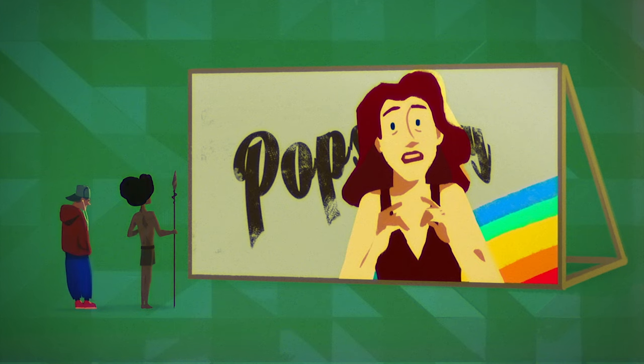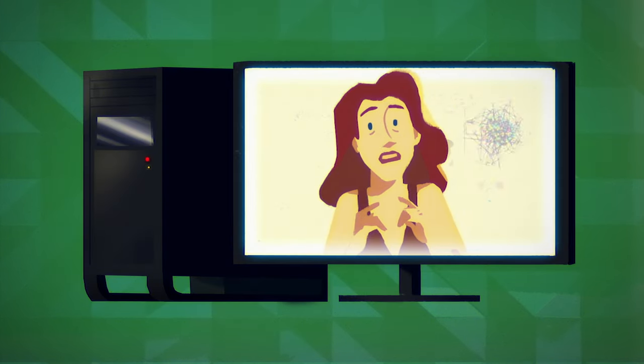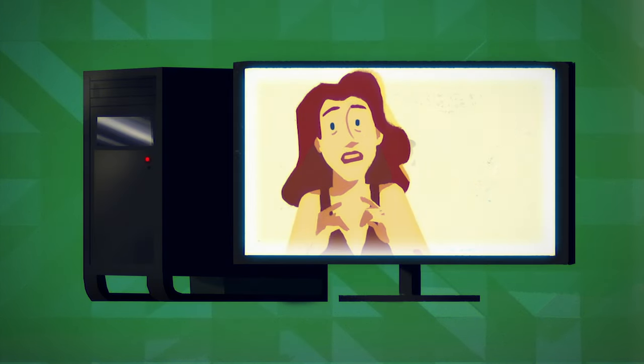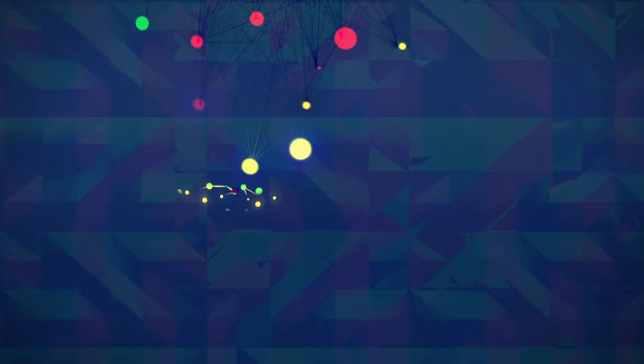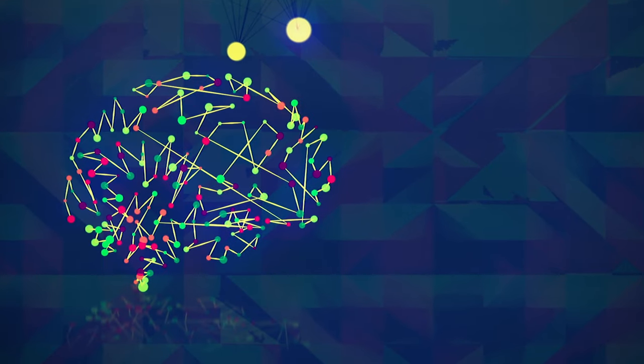As it turns out, computers are rapidly getting better at image recognition, thanks to machine learning algorithms such as neural networks. These consist of artificial nodes that mimic our biological neurons by forming connections and exchanging information.